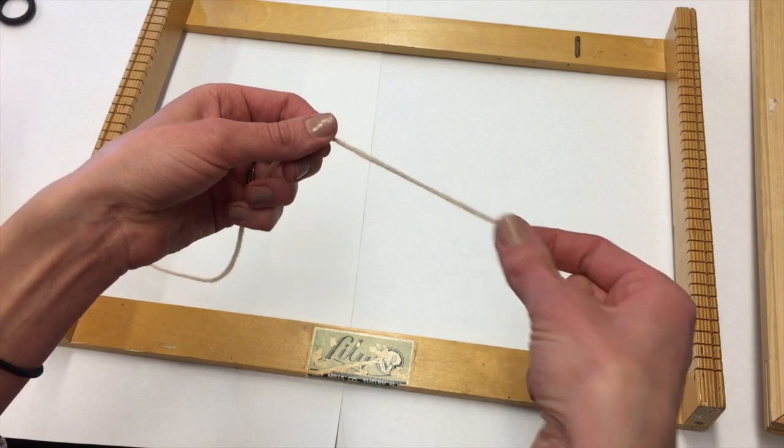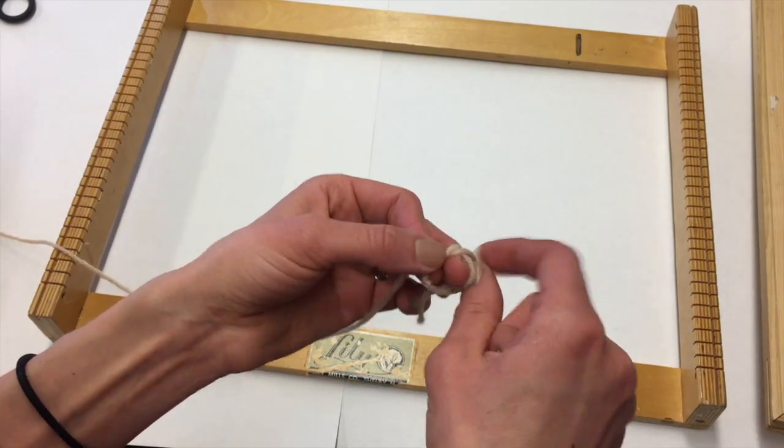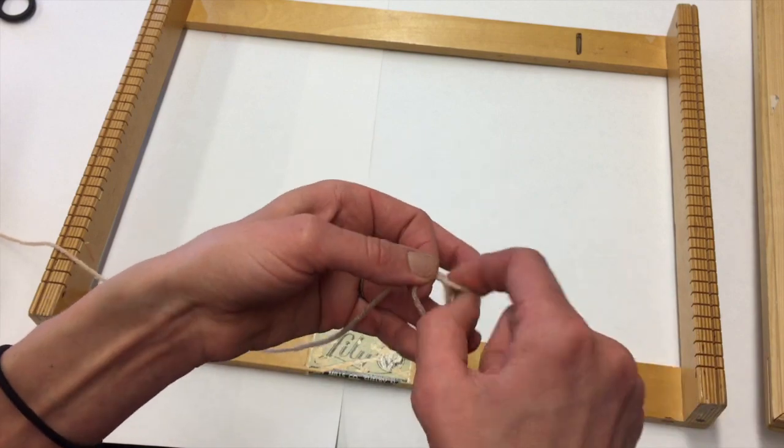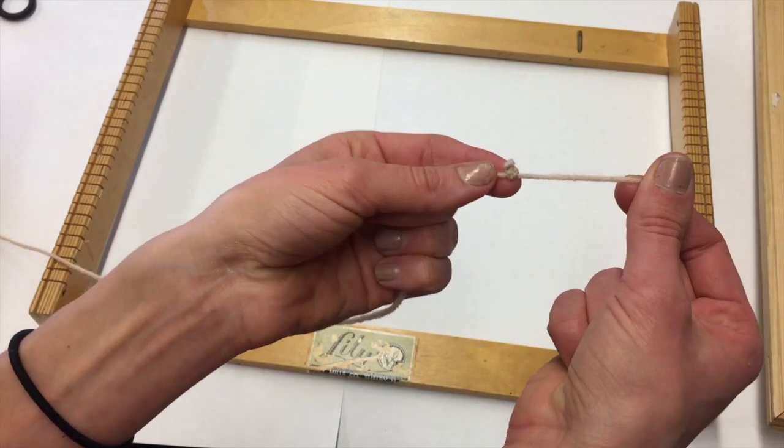First I'm going to show you how to put the warp on this notched loom. If you have a loom with nails, go ahead and skip ahead. I'm going to start by tying a knot in my string, three or four knots thick, so that it won't slip through the gaps.